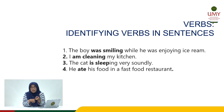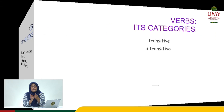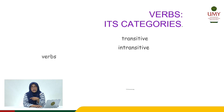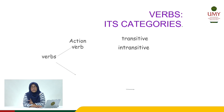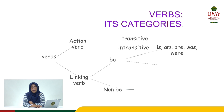So what are those categories of verbs? Now let's look at them. The categories of verbs can be seen in this diagram. There are two big categories of verbs: action verb and linking verb. You can also see that the action verb is divided into two more categories: transitive and intransitive.